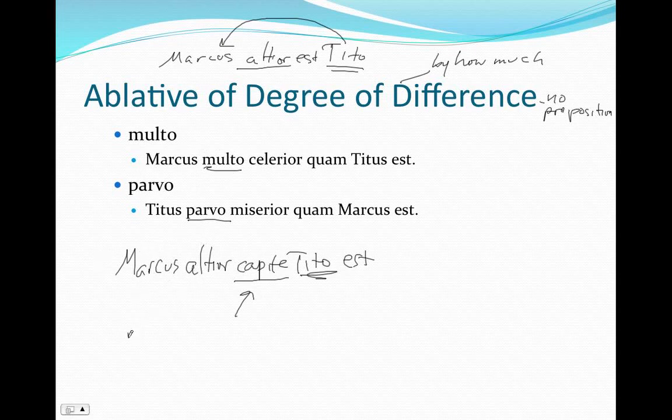Or we might say, the murus est altior pede, by a foot. So foot is another one of these common ablatives of degree of difference.